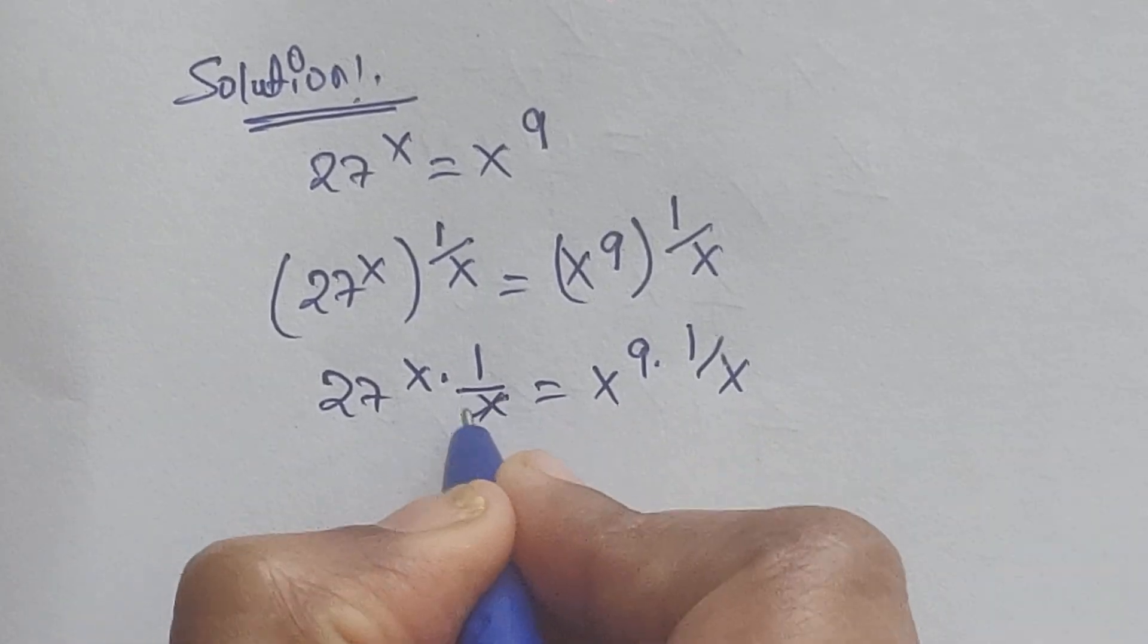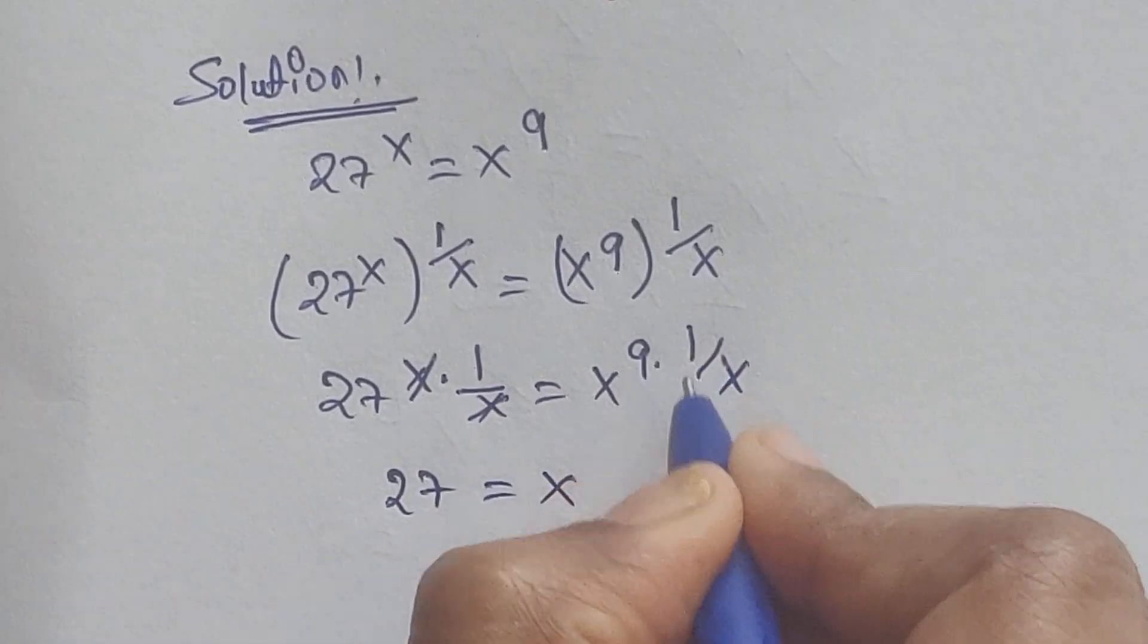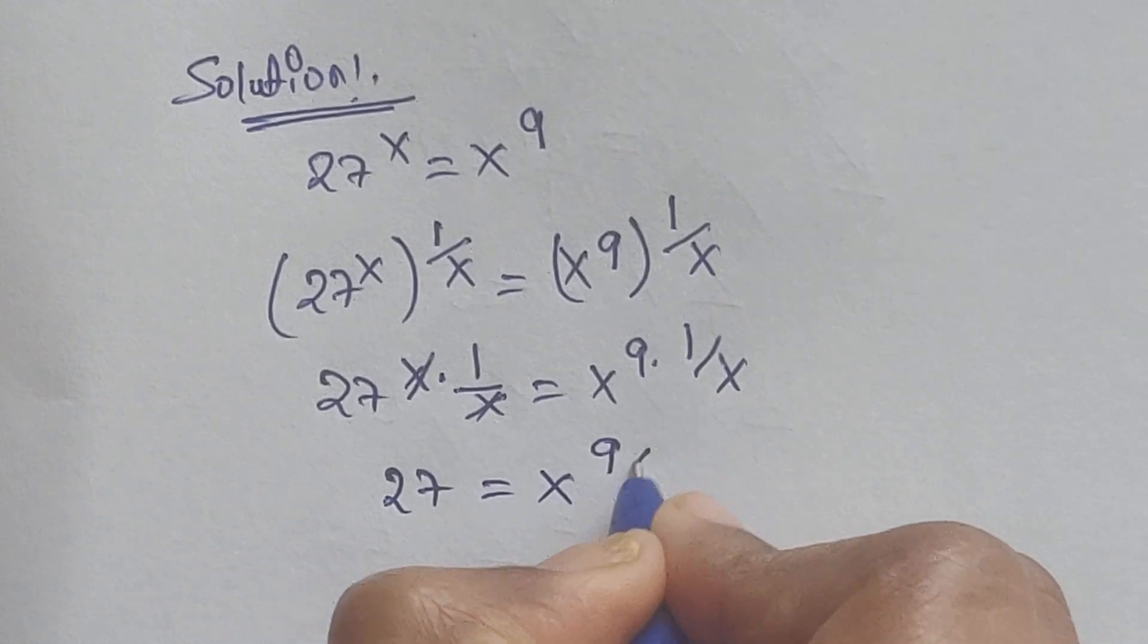So here x x get cancelled. 27 equals x to the power of 9 times 1, 9 divided by x.